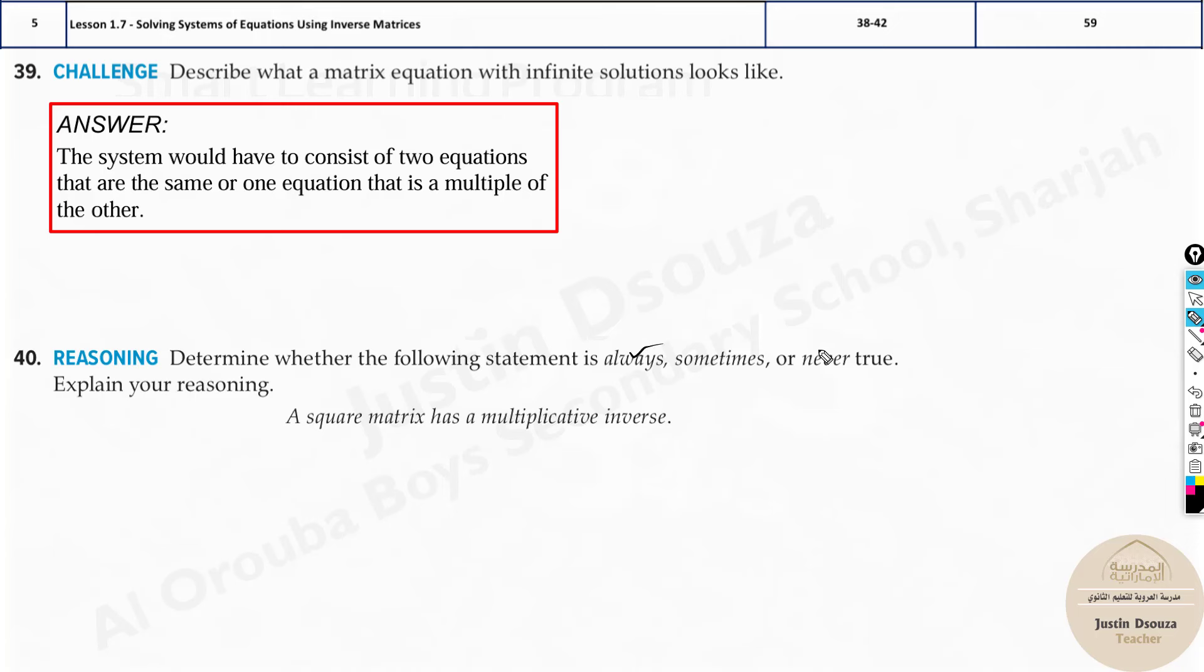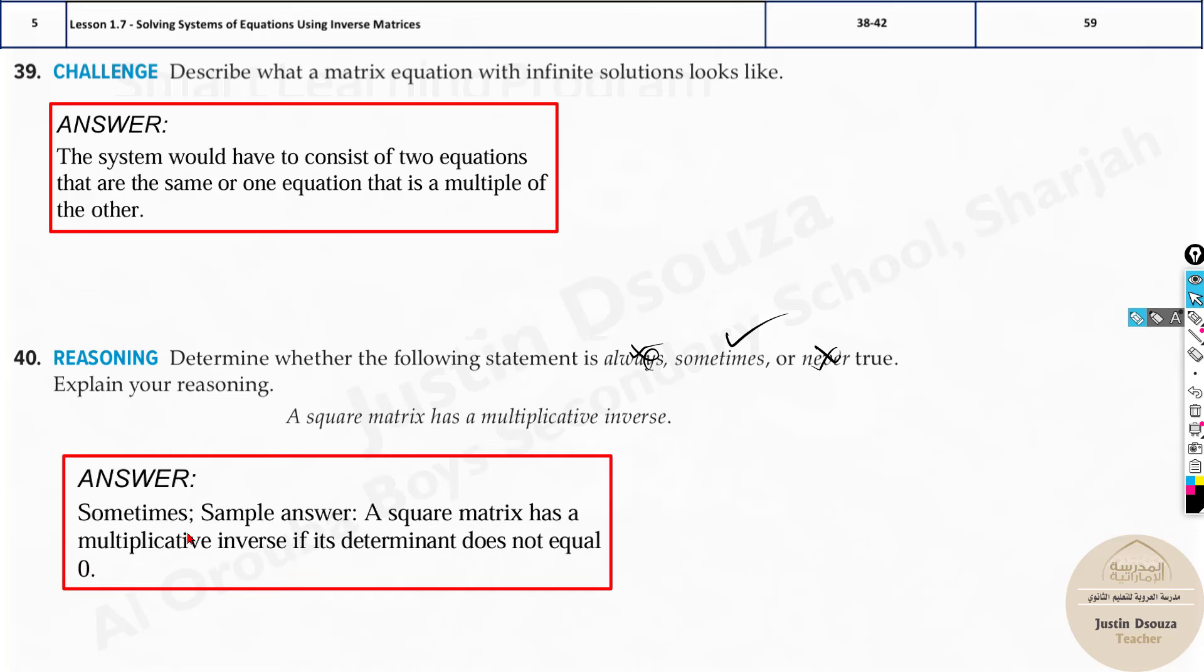So what happens is, you can't tell it's always or never, this is wrong. It's sometimes. So that's the thing. Why? Because if at all you get a determinant of a matrix to be equal to 0, then you do not have a multiplicative inverse. Inverse exists only when the determinant is not equal to 0. So the answer is sometimes. A squared matrix has a multiplicative inverse if its determinant does not equal 0. So if it is equal to 0, it doesn't have a matrix.